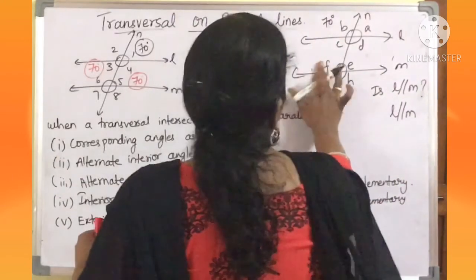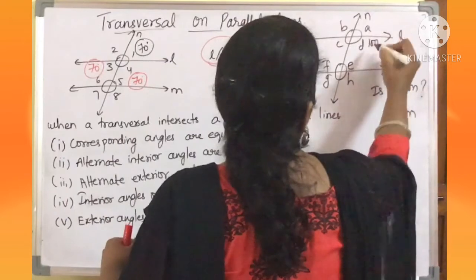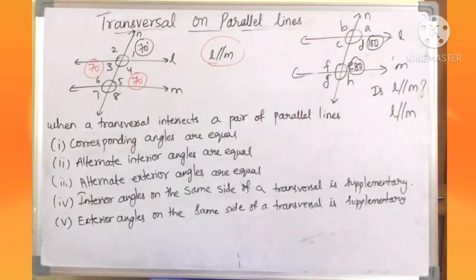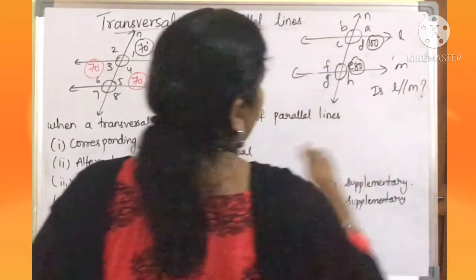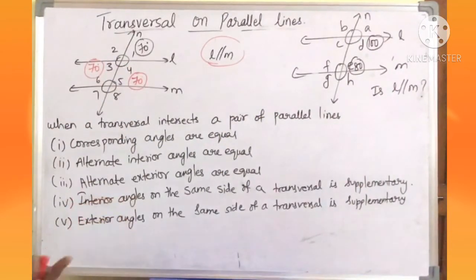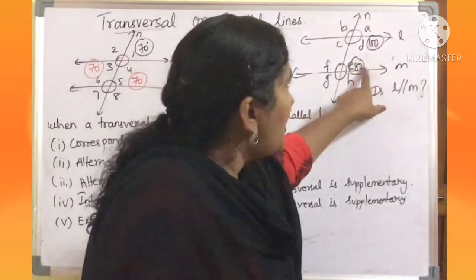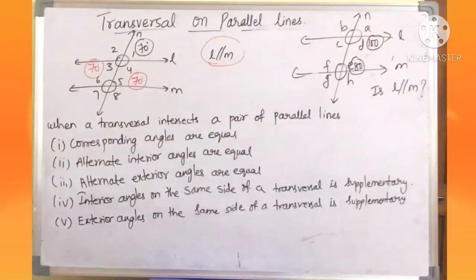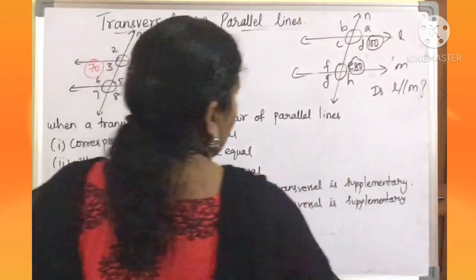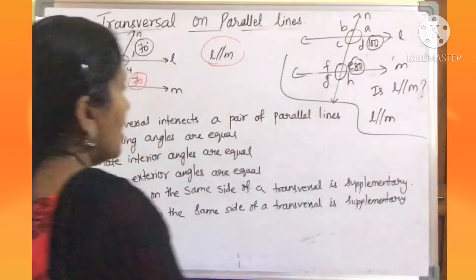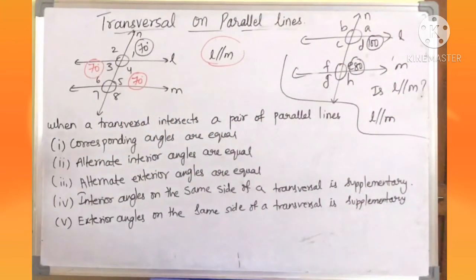For example, in a sum they give angle D as 100 and angle E as 80, and ask: is L parallel to M? Angles D and E form interior angles on the same side of a transversal. Adding them: 100 plus 80 equals 180 degrees — they are supplementary. So we can confirm that L is parallel to M. So these are the properties when a transversal intersects a pair of parallel lines.